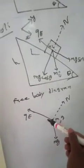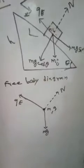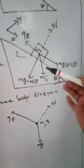M is the object. M represents the gravitational force. N is the normal force. QE is the electric field force. This diagram shows Mg, N, and QE. This is the free body diagram — the original diagram.